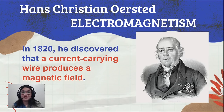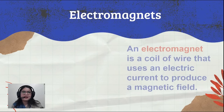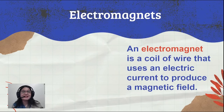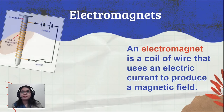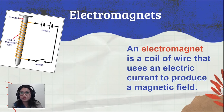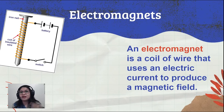That concept is what we call electromagnetism. From the term electromagnetism, we get the word electromagnet. An electromagnet is a coil of wire that uses an electric current to produce a magnetic field. This is the simplest electromagnet you can do at home — you just have an iron nail, wire, and connect it to a battery.